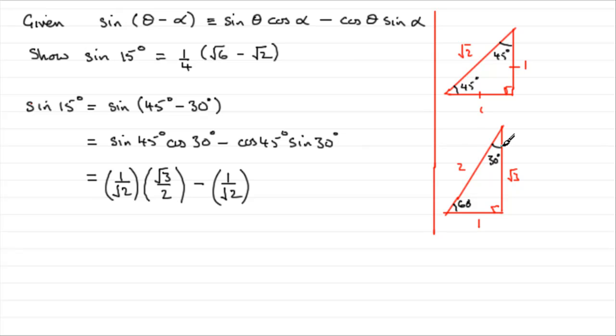Sin of 30, there's our 30 degrees, sin is opposite over hypotenuse, so the opposite is 1, hypotenuse is 2, so we end up with 1 over 2, or a half.